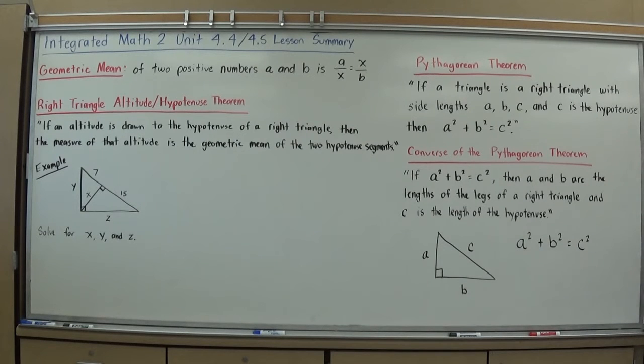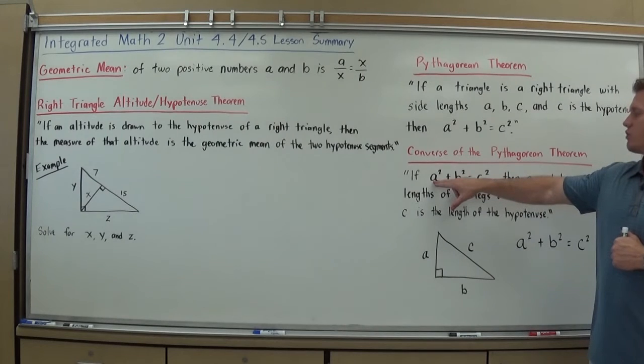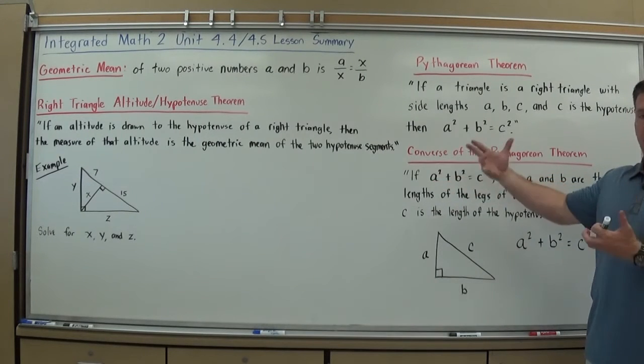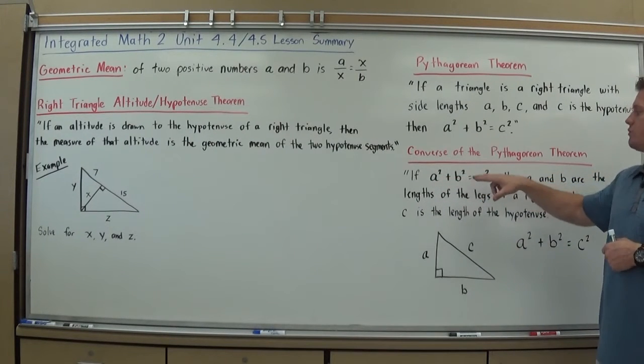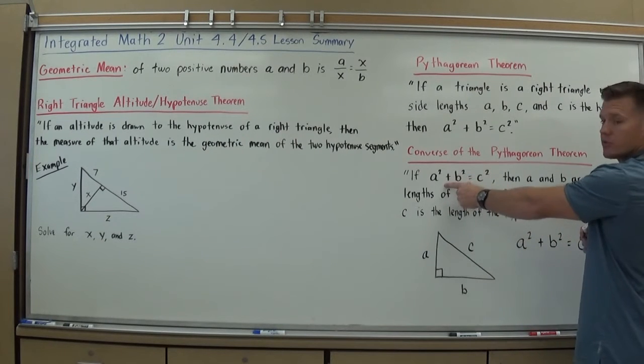The converse of the Pythagorean Theorem is that in reverse, stating that if the side lengths of a triangle work out in this equation, so that A squared plus B squared does exactly equal C squared, then A and B are the lengths of the legs of the right triangle, and C is the length of the hypotenuse.